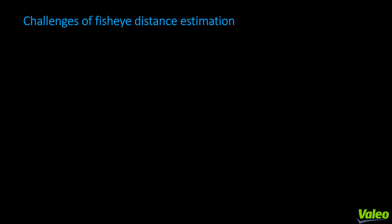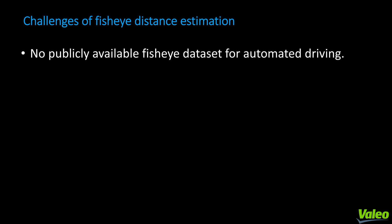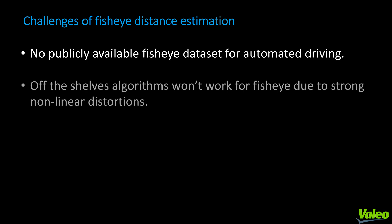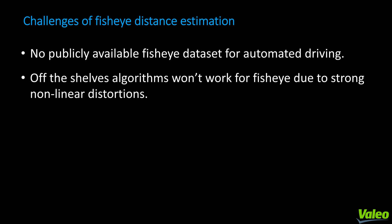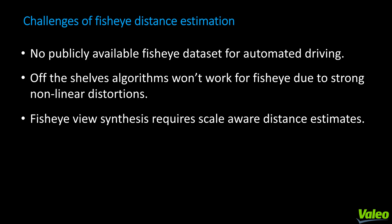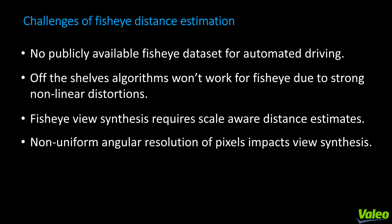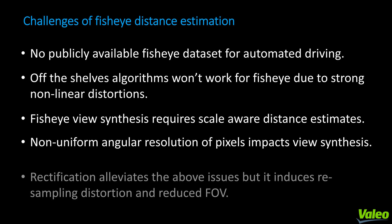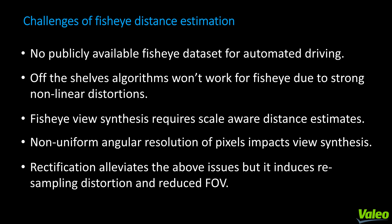Some of the challenges of fisheye distance estimation are: firstly, there is no publicly available fisheye dataset, particularly for automated driving. Henceforth, we are releasing our distance estimation dataset along with our WoodScape dataset, which contains other perception tasks. Off-the-shelf algorithms like OpenCV's SGM won't work for fisheye due to its substantial strong non-linear distortions. To perform view synthesis using fisheye images, we would require scale-aware distance estimates. Non-uniform angular resolution leads to ambiguity in the center region for the network's distance estimation. Rectification alleviates the above issues but induces resampling distortion and reduced FOV, as we saw earlier.